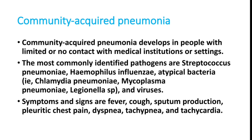Symptoms of pneumonia are high degree fever with chills, cough, sputum production, pleuritic chest pain — which means pain on the chest that increases on deep inspiration — dyspnea, tachypnea, and tachycardia. These are the common clinical findings of pneumonia.